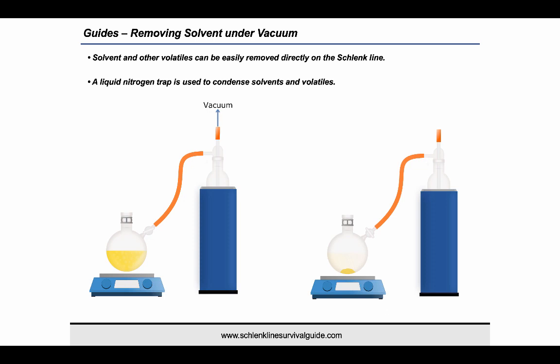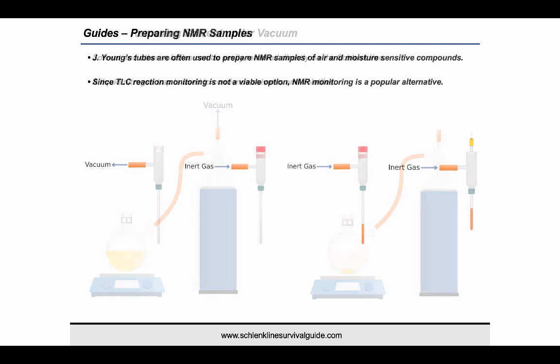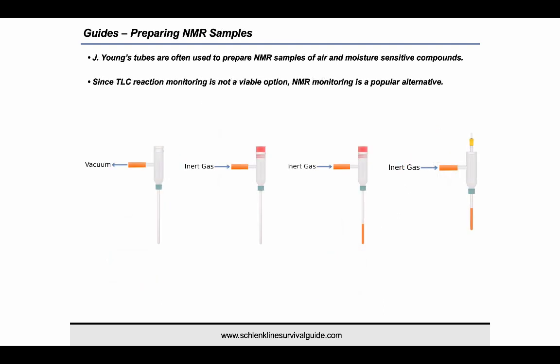Schlenk lines are equipped with high vacuum pumps allowing solvents and other volatiles to be easily removed directly on the Schlenk line. When removing large volumes of solvent or particularly nasty or corrosive volatiles, it is recommended to use a secondary external liquid nitrogen trap. Once the solvent has been removed in vacuo, the Schlenk flask can be taken directly into the glove box or cycled back onto the Schlenk line to be filled with inert gas for further manipulations. NMR samples containing air or moisture-sensitive species are often prepared in J. Young's NMR tubes. Using a suitable adapter, the tube is first cycled onto the Schlenk line and then an aliquot of a reaction mixture is transferred into the NMR tube by syringe or cannula transfer.